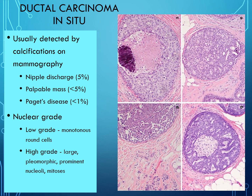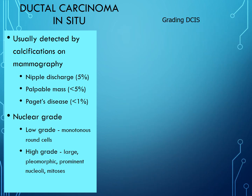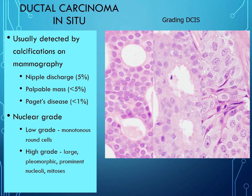DCIS grading ranges from low to high: low-grade has tiny, really round, inconspicuous nuclei; intermediate-grade has slightly more prominent nuclei with larger cells; high-grade has odd-shaped, very enlarged nuclei with macronucleoli. We wouldn't ask a medical student to grade DCIS, but just be aware of how it's graded.